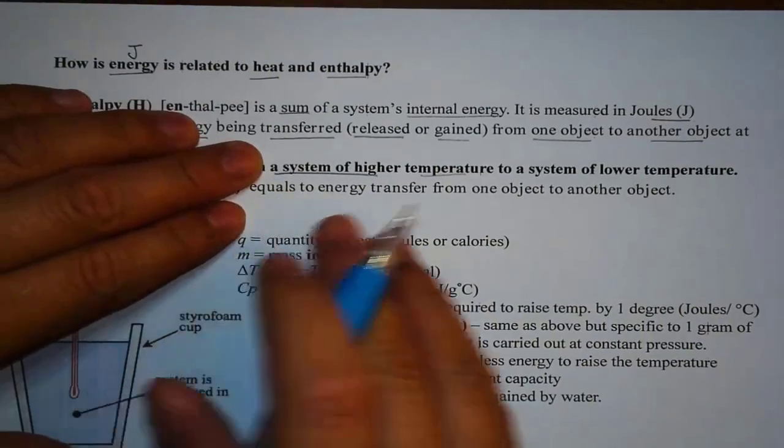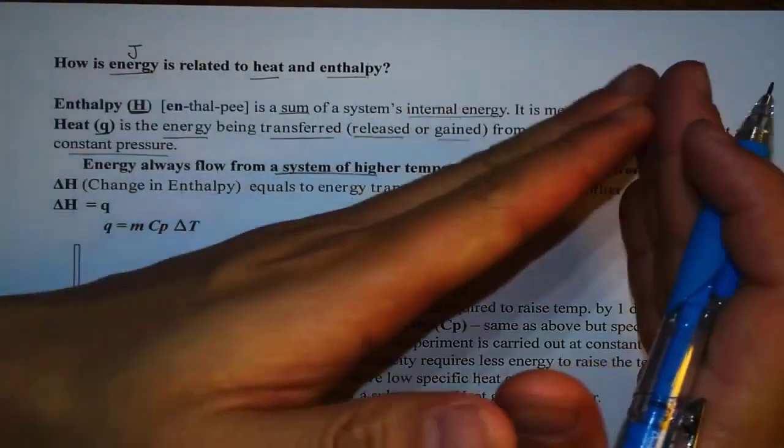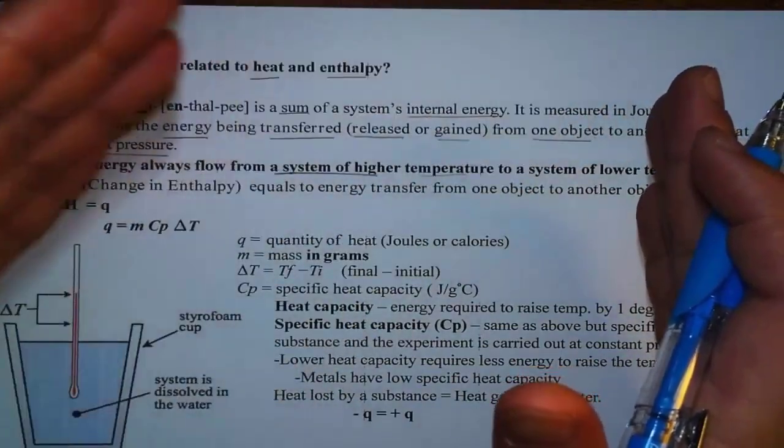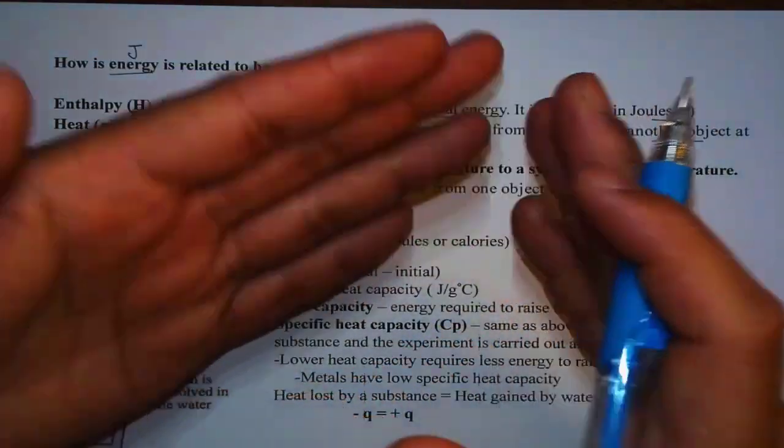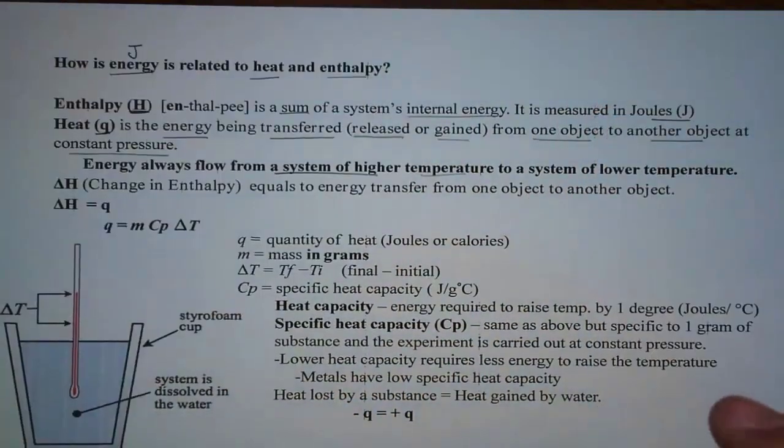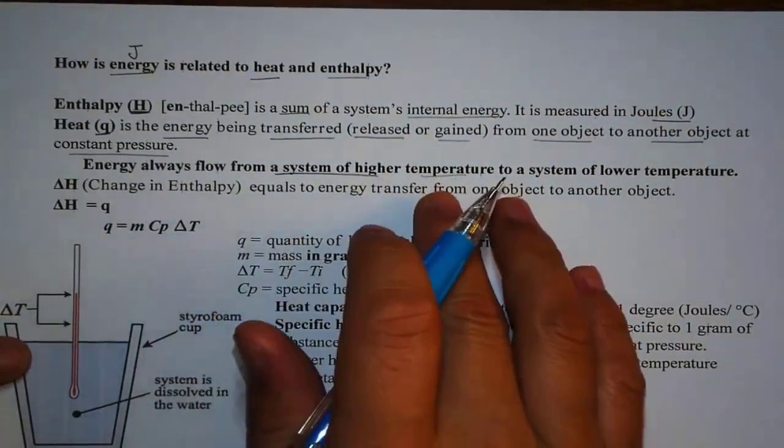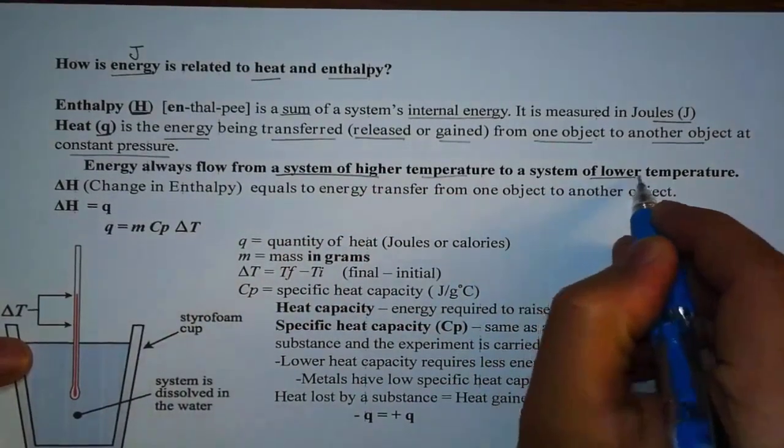Basically, saying that if you have a hot object in contact with another cold object, that energy in the hot object will go to the cold object. Eventually, both systems have the same temperature. So it will always flow from high temperature to lower temperature.